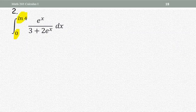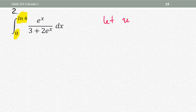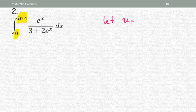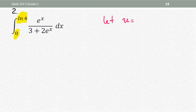We have a definite integral with lower limit zero, upper limit natural log four, and the integrand e to the x divided by three plus two e to the x. Any suggestion for the variable u? In this problem we don't see a composite function, so if we don't see the composite function we're going to look at which part is more complicated — though complicated doesn't mean it's always going to be a composite function.